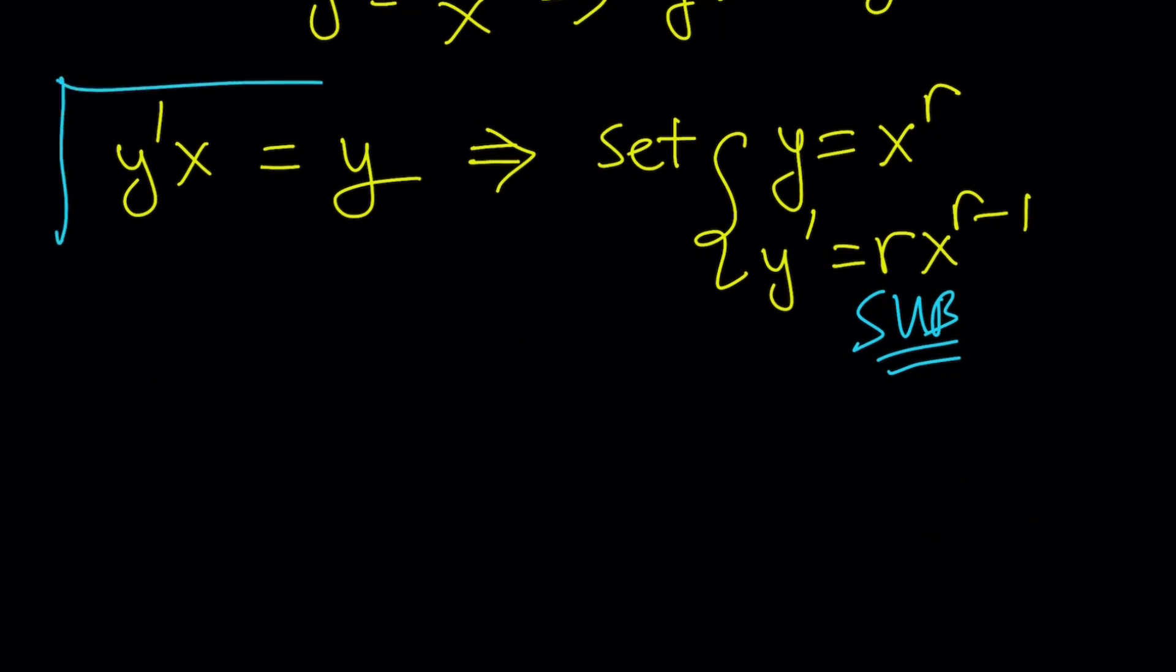So, y prime from here becomes r times x to the power r minus 1. Using the power rule, we can easily differentiate this as a polynomial or just some power function. Okay. Now, we're going to go ahead and sub these into our equation. Let's go ahead and substitute. What is my equation? This one. Okay. I have y prime x equals y. And what is y prime? r times x to the power r minus 1. What is x? x is x. And on the right hand side, I have y, which is x to the power r. This might look like trivial to you or kind of obvious, but it's not obvious because this is a specific type of equation. It's not always true. Only for certain y values or functions, this is true.